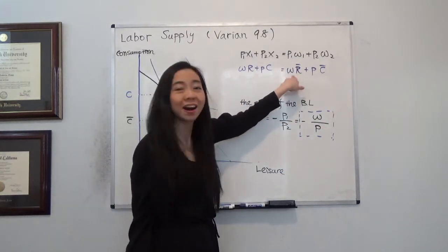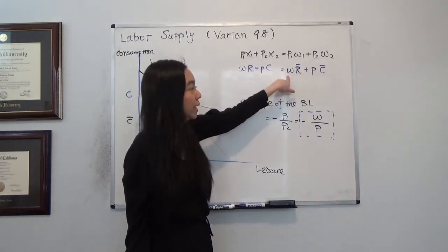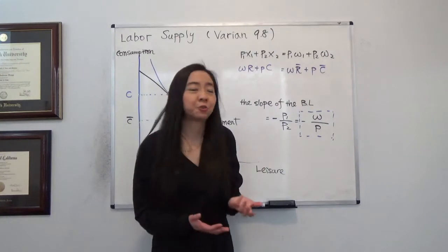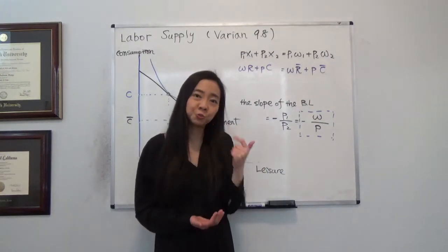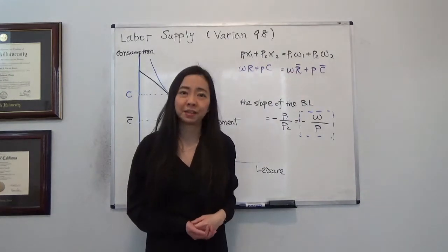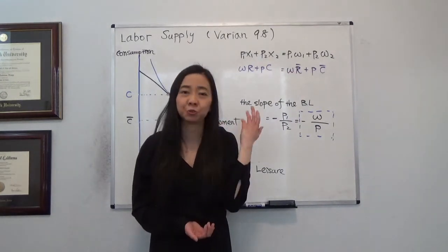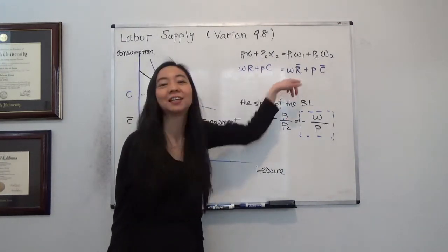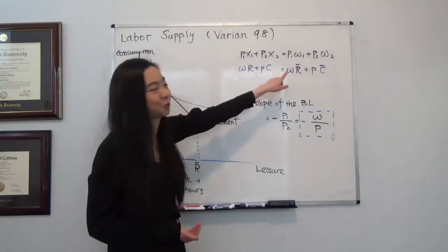Now what's the value of this endowment? So the value of r̄ hours will be the wage rate times r̄. Why is that? Because I know for each hour, if I choose to work, I will get my wage rate. If I choose to spend the time on leisure, that means I have to give up the wage. So I know the price of my leisure is actually equal to the wage rate.